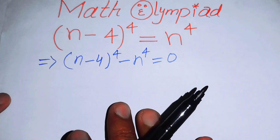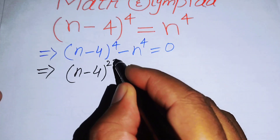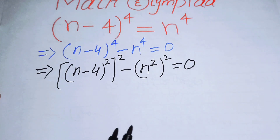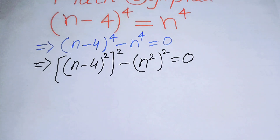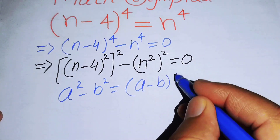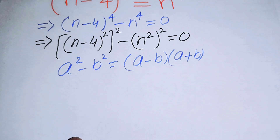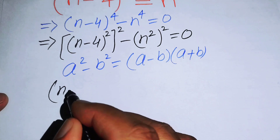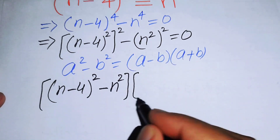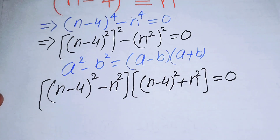In the next step we rearrange the expression in the form of [(n minus 4)²]² minus [n²]² equals 0. Now we can use the difference of squares identity: a² minus b² equals (a minus b)(a plus b). Applying this formula, the expression becomes [(n minus 4)² minus n²] times [(n minus 4)² plus n²] equals 0.